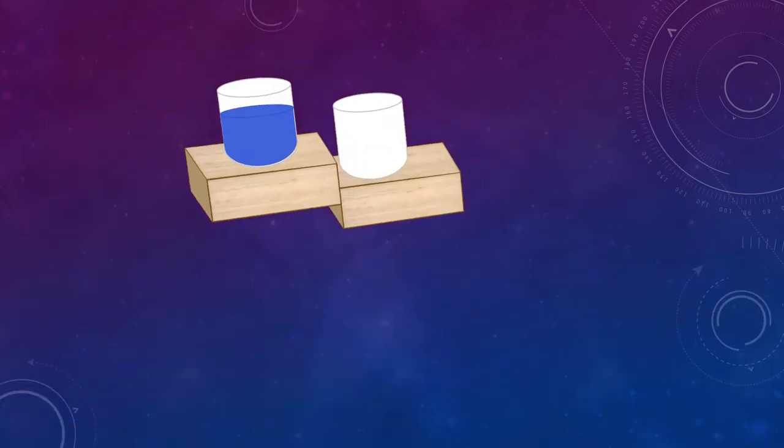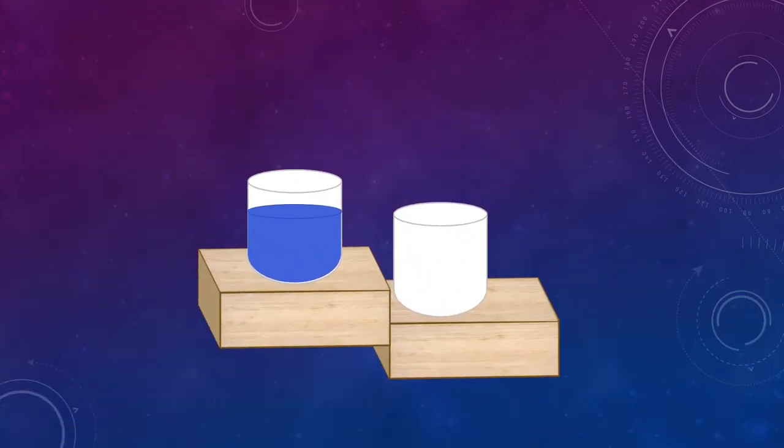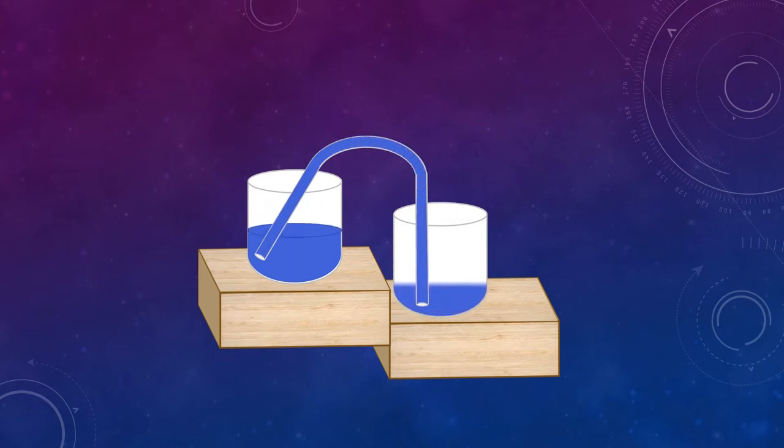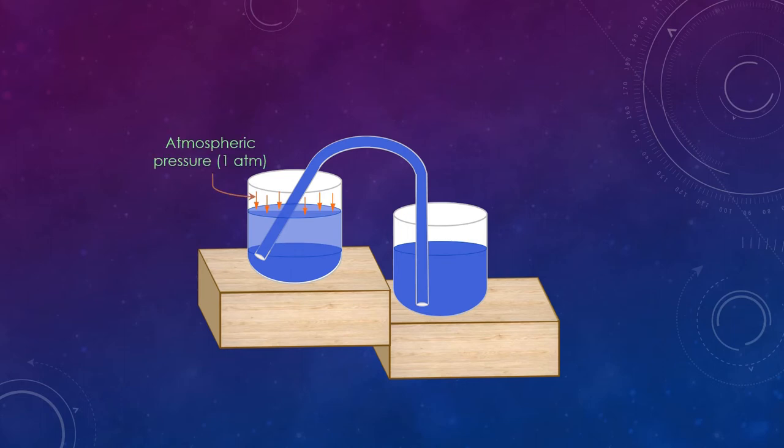So now let's understand the working principle behind siphoning. When you suck the air out of the other end of the inverted U tube, there is a vacuum or a low pressure state inside the tube, and the water at the surface of the filled beaker is constantly under atmospheric pressure. So this pressure pushes the water inside the tube to a height and then flows down due to gravity.